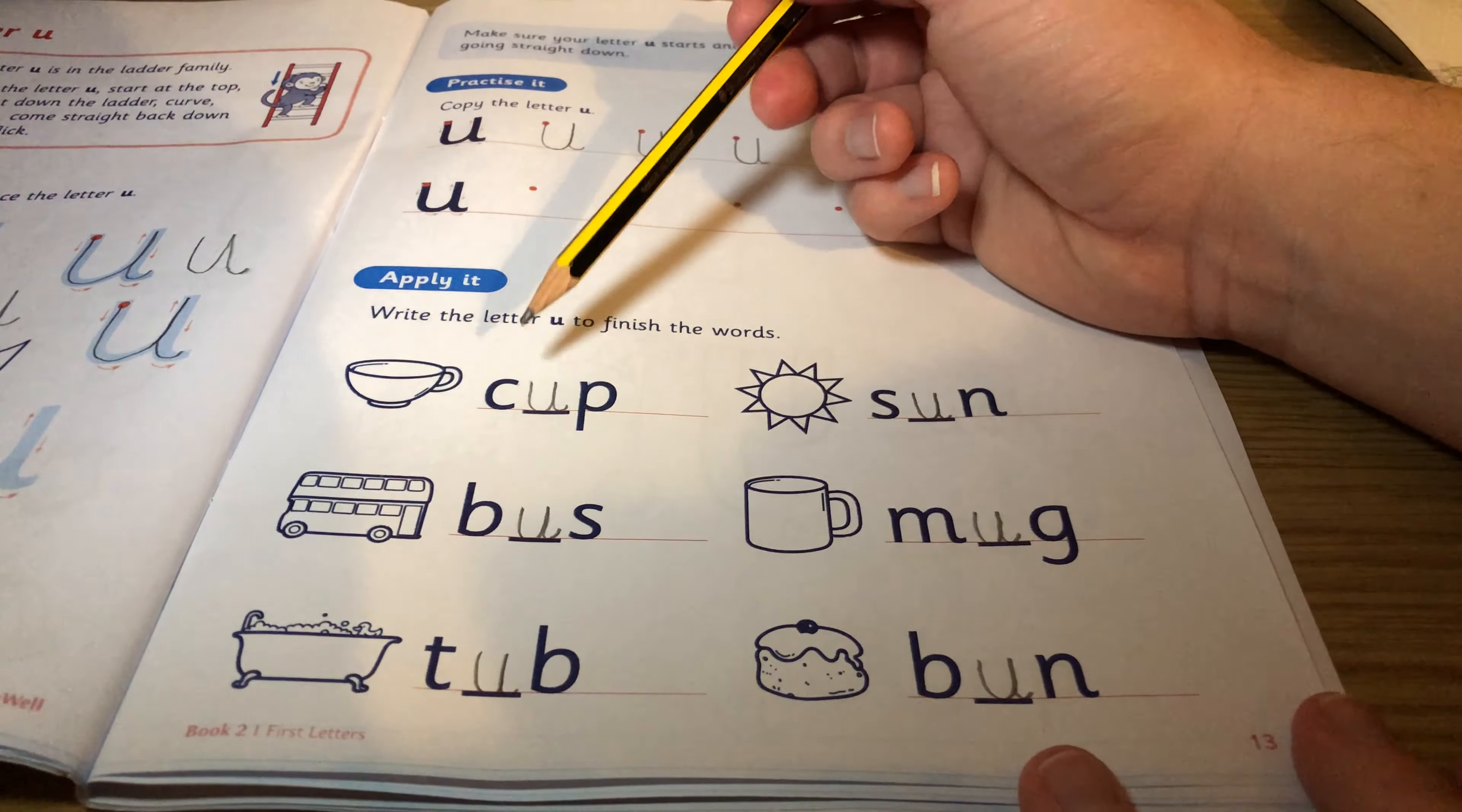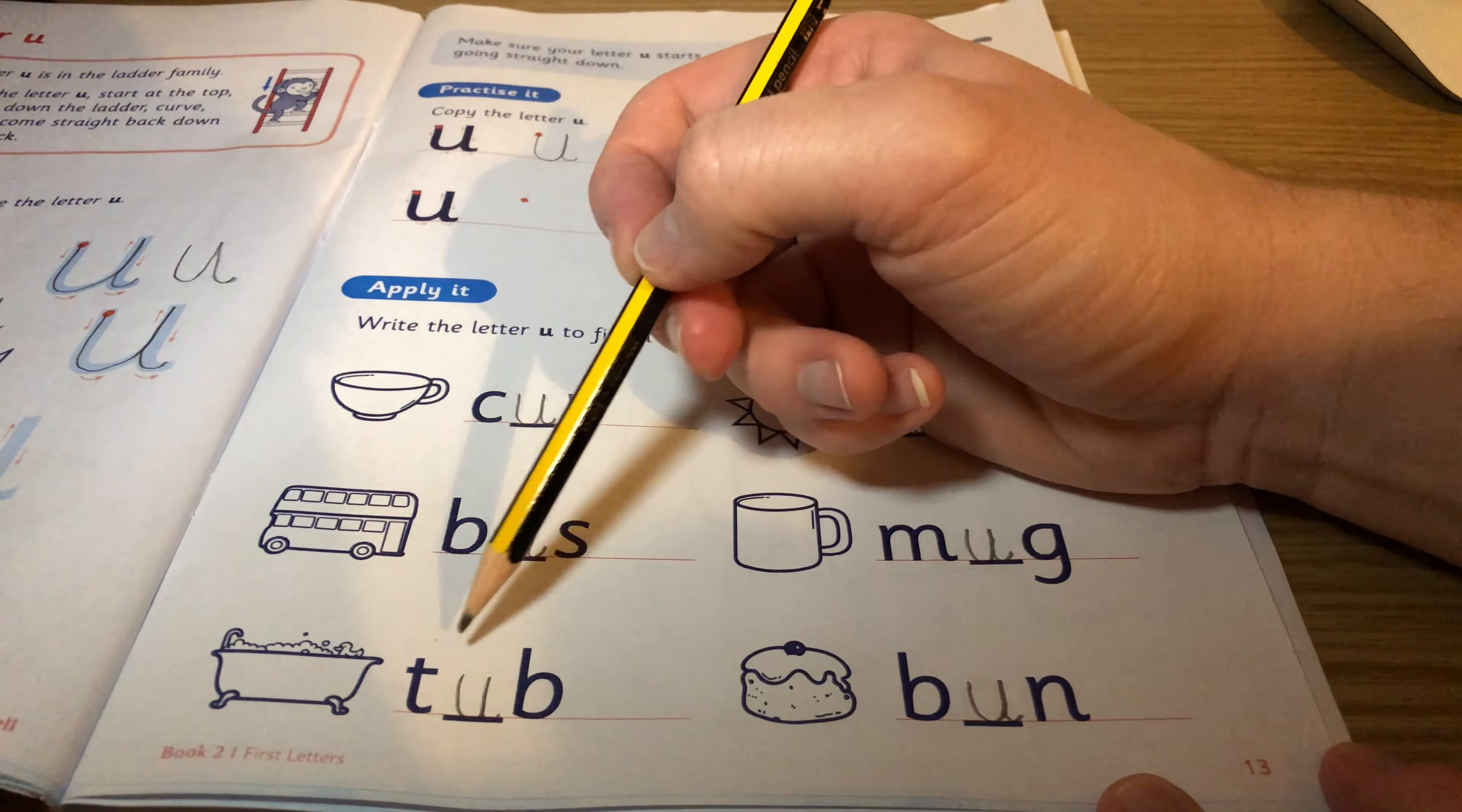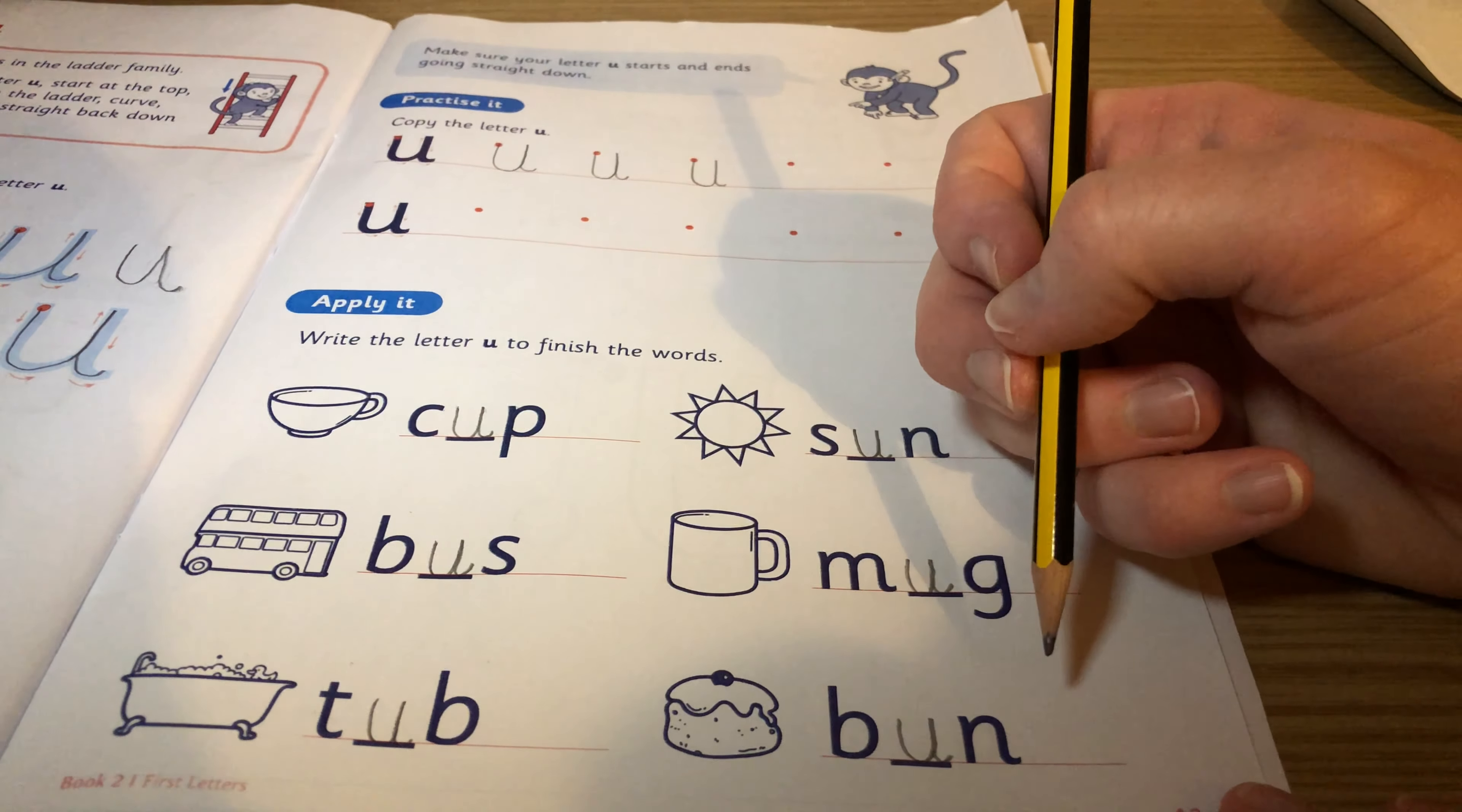We talked about vowels the other day in phonics. U is a vowel, an A, and look it's in the middle of all of these words. Now I think we can read these pretty quickly. Are you ready? Let's go. C-U-P cup, this one. B-U-S bus, down to here. T-U-B tub, up to the top. S-U-N sun, over here. M-U-G mug, and then this one. B-U-N bun, that'd be nice wouldn't it?